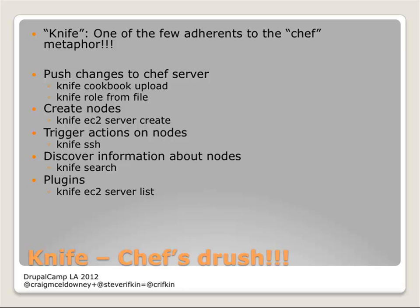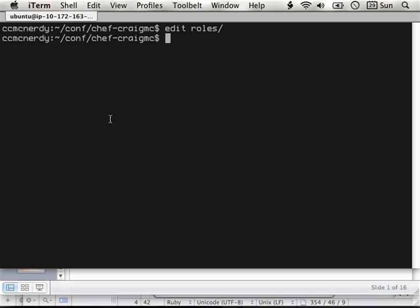You use knife to push code to Chef server, to trigger spinning up boxes — like 'knife EC2 server create' — to trigger actions on nodes, and to discover information about nodes. There's a whole plugin ecosystem for knife that lets you do some pretty cool stuff, including cloud-specific providers like Amazon EC2, Rackspace, and most large cloud providers. It's all stored in JSON, so it's completely editable — very simple to pop open a JSON file and see how a node is configured, or what Chef server thinks is the authoritative place for Varnish or your NFS box.